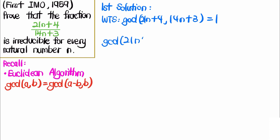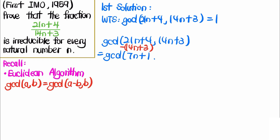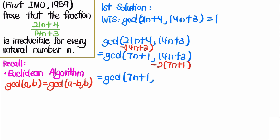Using the Euclidean algorithm, we take the GCD of the two numbers and subtract (14n + 3) from (21n + 4), giving us the GCD of (7n + 1) and (14n + 3). Then we subtract 2 times (7n + 1) from (14n + 3). The red part becomes 14n + 2, leaving us with GCD of (7n + 1) and 1. The GCD of any number and 1 is just 1.